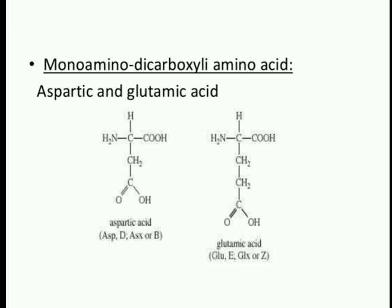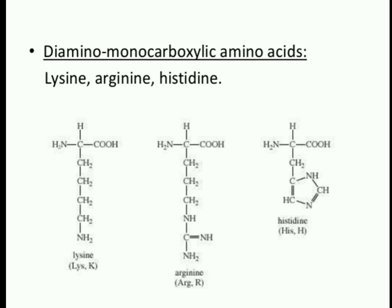Mono-amino dicarboxylic amino acids contain one NH2 group and two COOH groups — examples are aspartic acid and glutamic acid. Di-amino mono-carboxylic amino acids contain two NH2 groups and one COOH group — examples are lysine, arginine, and histidine.